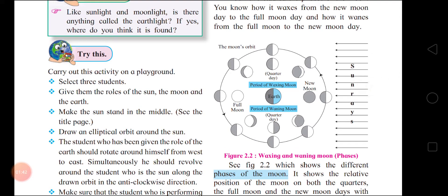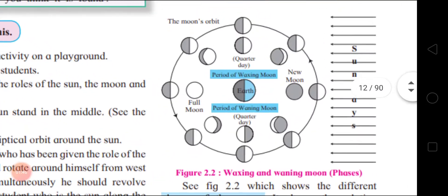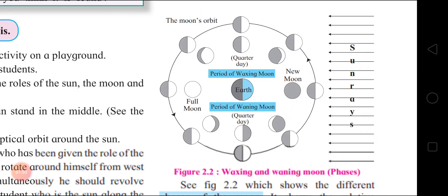From the new moon to the full moon — right side is new moon and left side is full moon. From the new moon to the full moon, the illuminated part of the moon goes on increasing gradually. The illuminated part, means the lighted part, of the moon goes on increasing gradually.